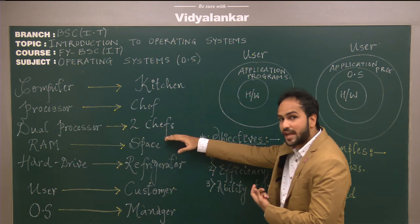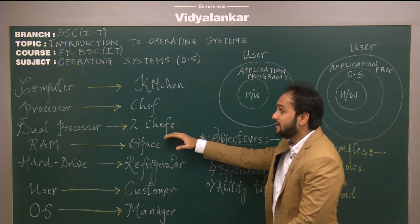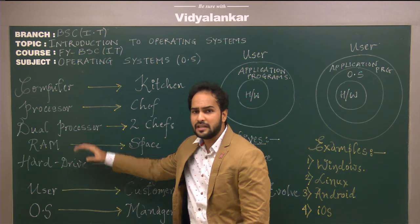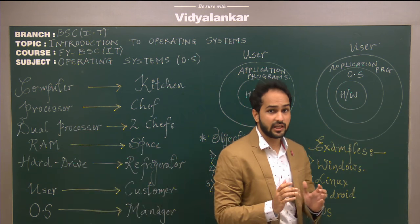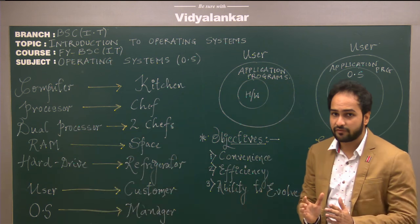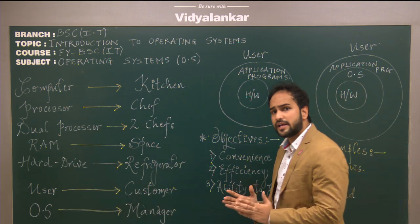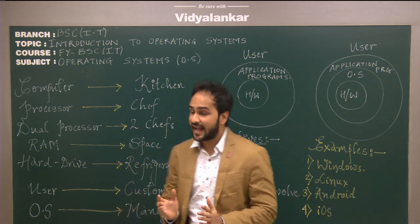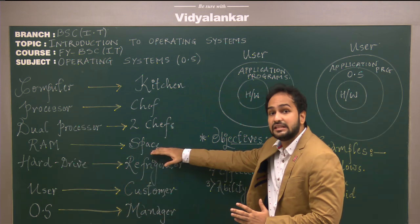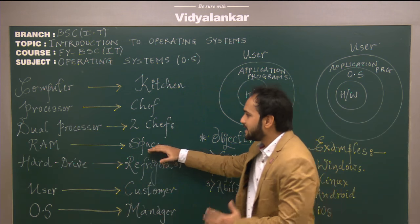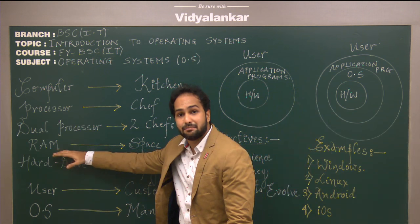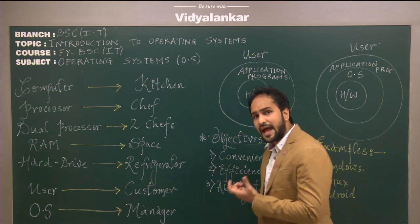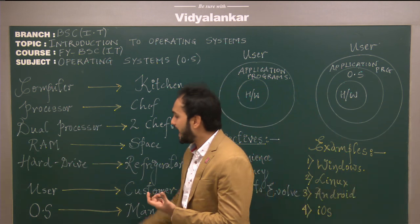If there are two chefs in the kitchen, then we say it is a dual processor. Now we have the restaurant, the kitchen, the chef, and this chef requires some space to cook the food. So we say that the space in the restaurant is just like the random access memory of the computer system, also called RAM.